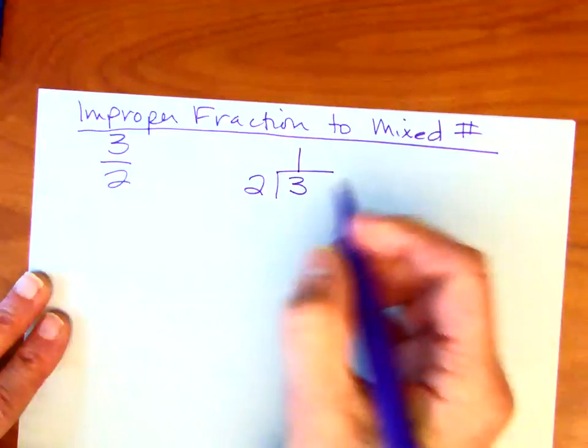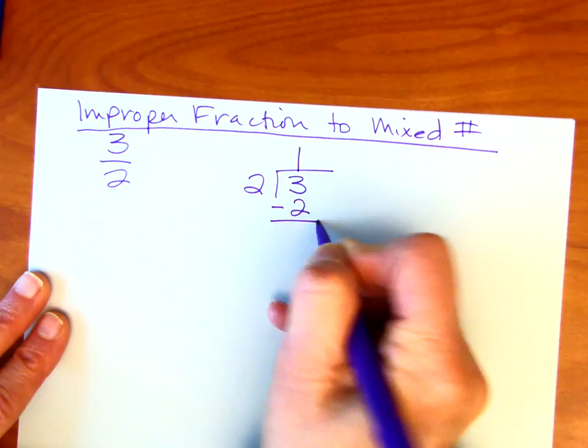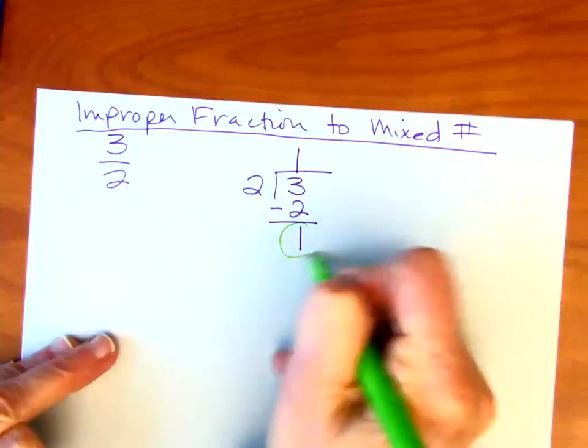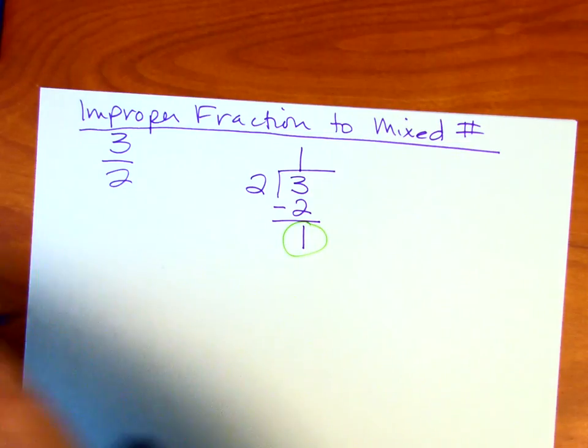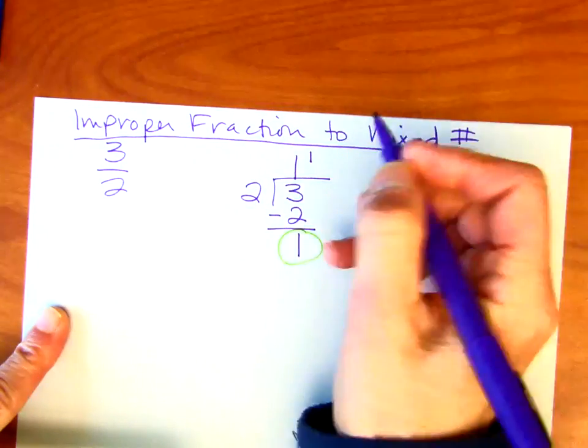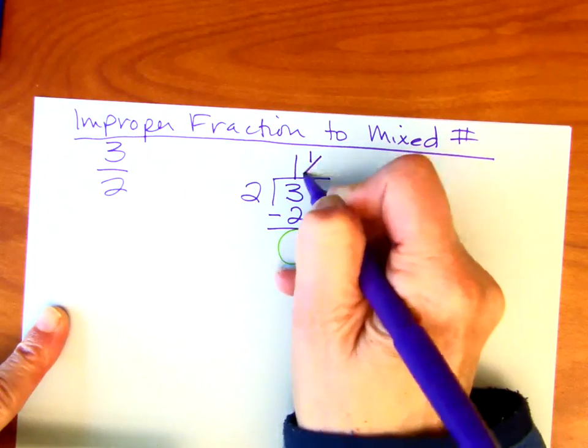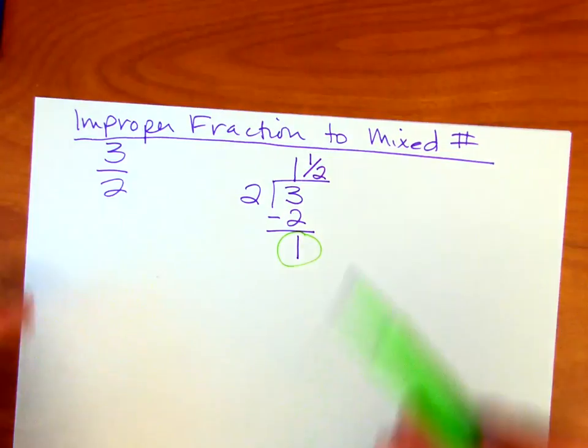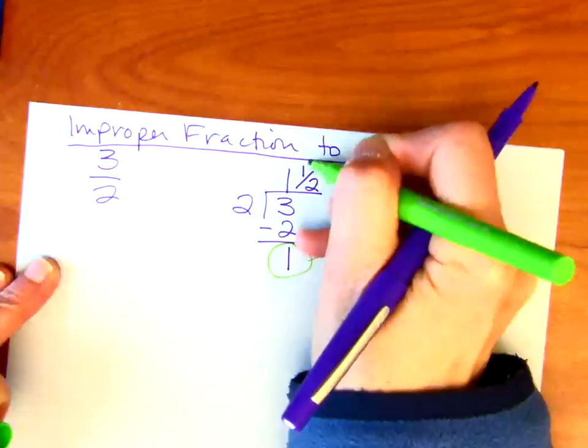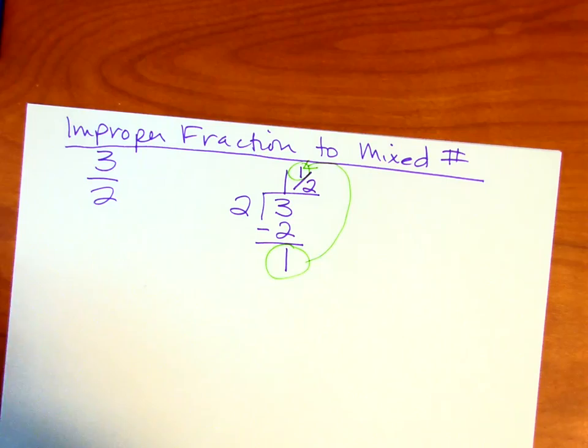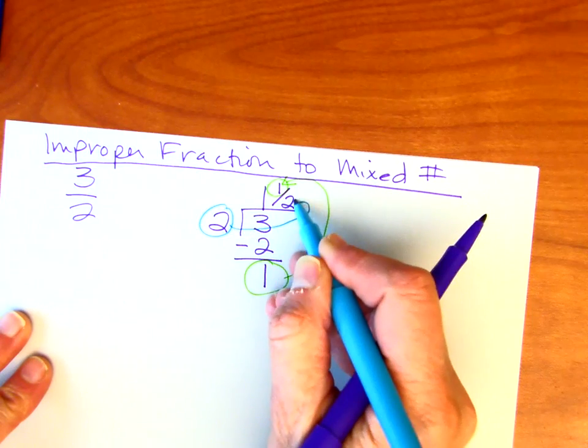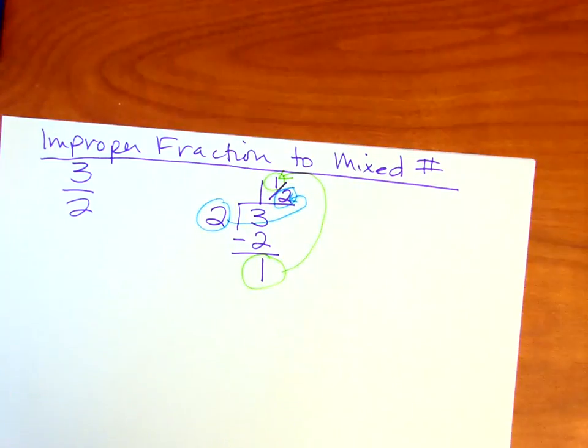And then we subtract, and our difference, this number here, is going to be transported over here. This will now be our numerator, and then the denominator here goes here. So again, we've got the one. It goes in this position. And then this divisor, which is our original denominator, is now the denominator of our new fraction.